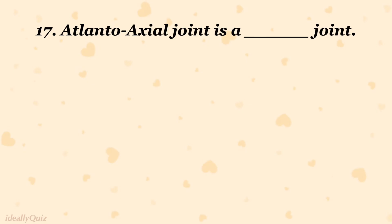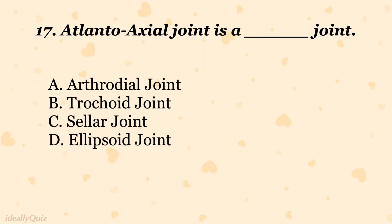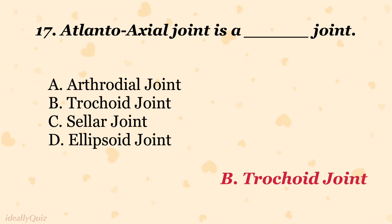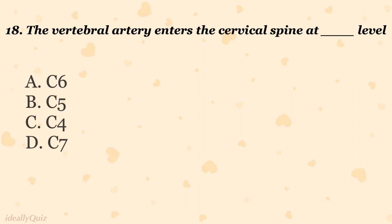The atlantoaxial joint is classified as: A. Arthrodial joint, B. Trochoid joint, C. Sellar joint, D. Ellipsoid joint. The correct answer is B. Trochoid joint.